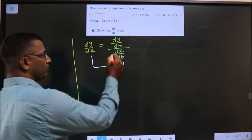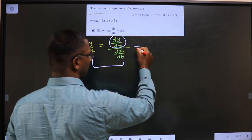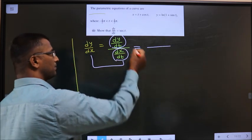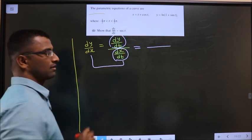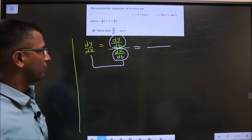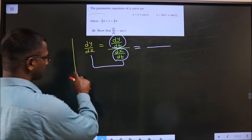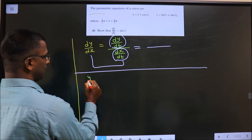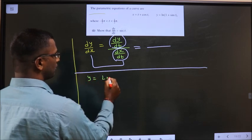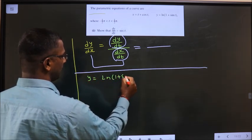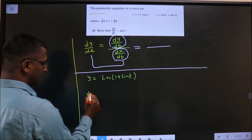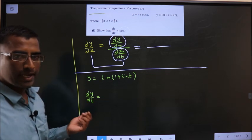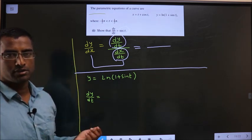Now find dy by dt. Place it here. Find dx by dt. Place it here. And simplify you will get secant t. Okay. First let us get dy by dt. For that we need y. y equal to ln of 1 plus sin t. I need to find dy by dt.